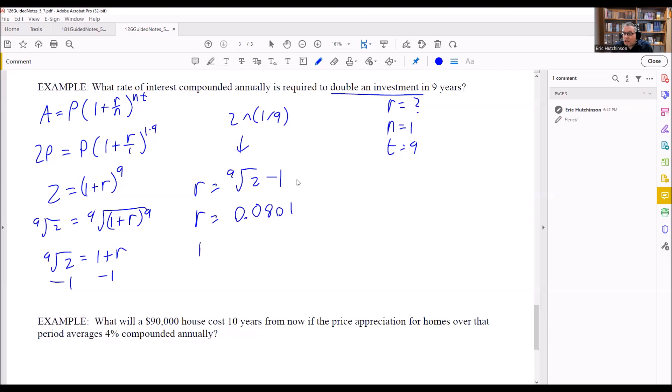Now for this, it'll tell you in the homework what to round your answer to. In this case, we're going to round our answer to two decimal places. So if we round to two decimal places here, you move the decimal place two places to the right, and you get 8.01%. And so that would be the interest rate that you would need compounded annually in order to double your investment. If you want to double that in nine years, you need this rate in order to do so.